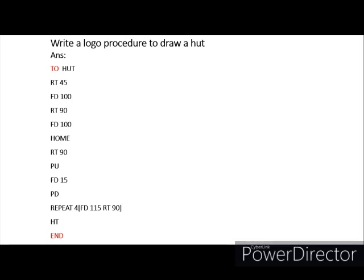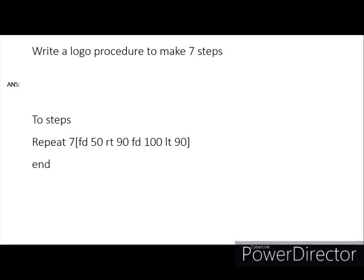If you haven't finished, pause the video and copy the code. Last one: write a Logo procedure to make seven steps. Using the REPEAT command: REPEAT 7 [FD 50 RT 90 FD 100 LT 90], then END, to draw seven steps. Thank you so much, that's all for today — bye!